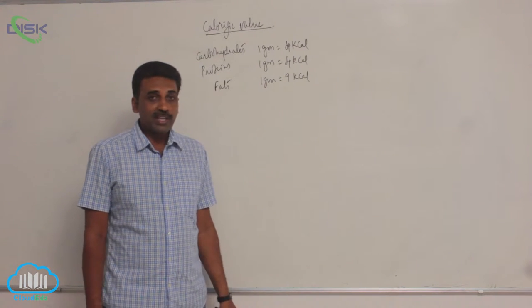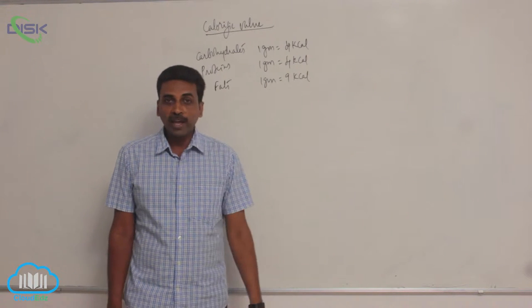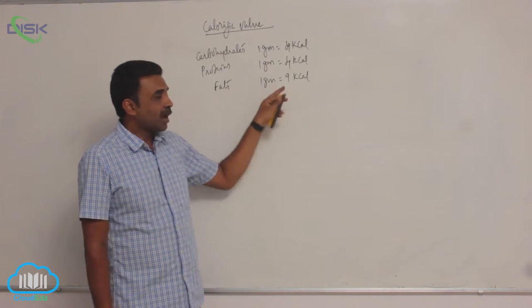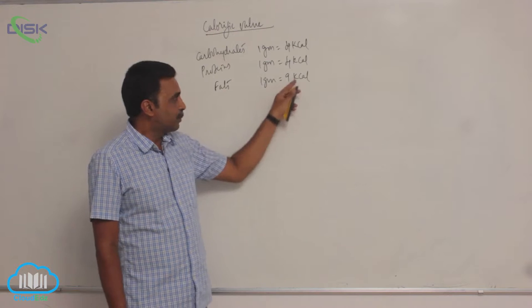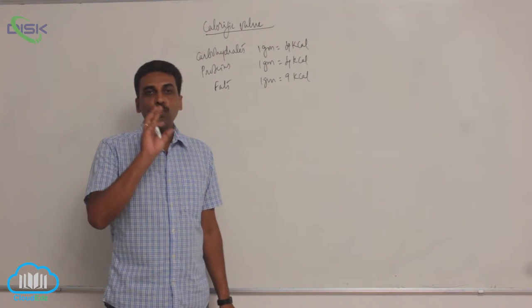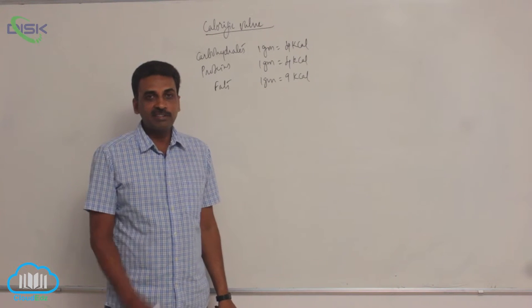But if you see fats, 1 gram of fats or lipids produces 9 kilocalories of energy. That means there is more energy present inside the fat, and fat is a reserve food material.